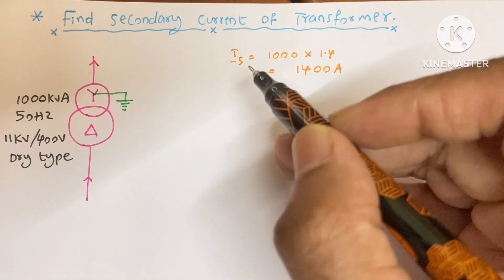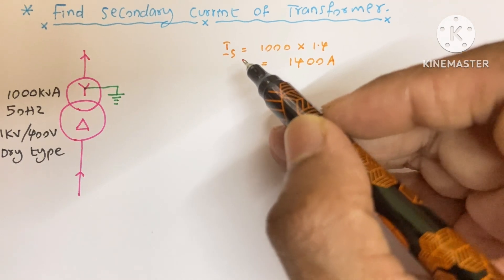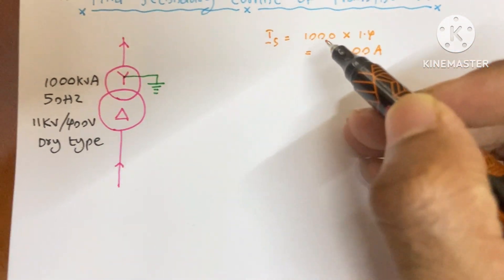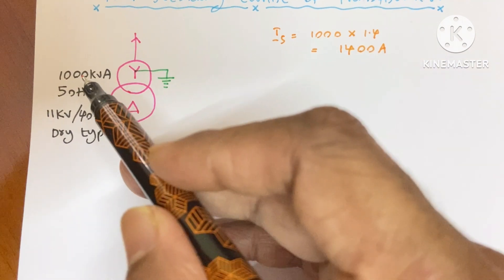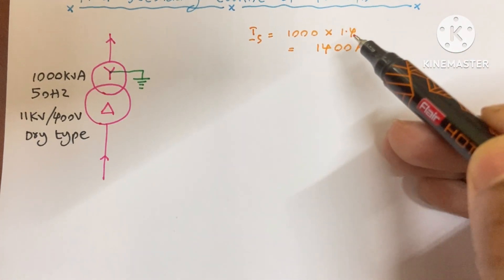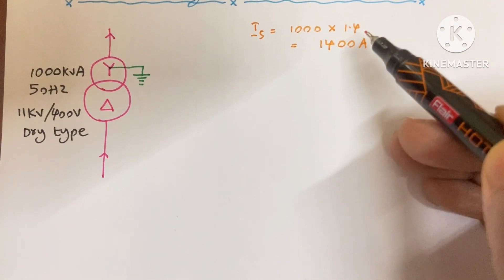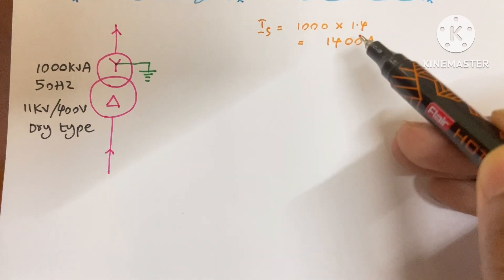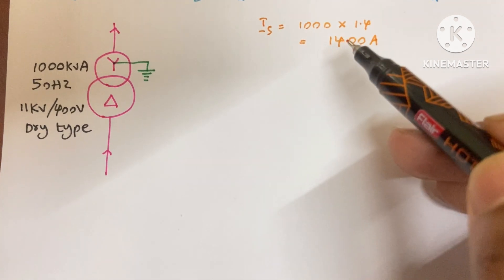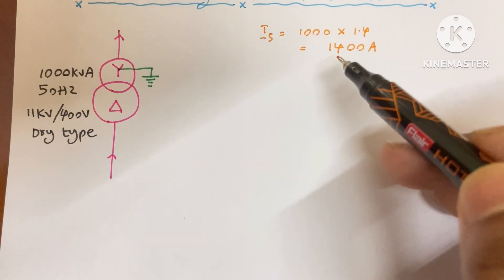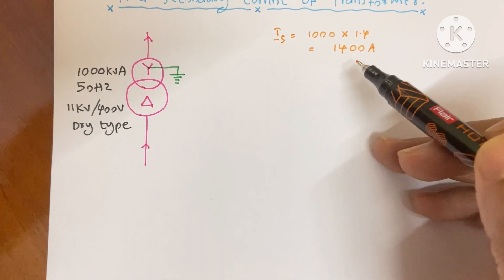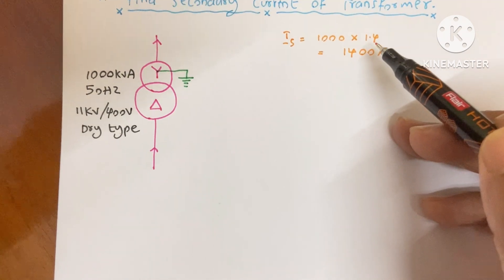This transformer's secondary current Is equals 1000 — this 1000 comes from the 1000 kVA — multiplied by 1.4, which is the magic value. So if you multiply these two together you get 1400 A. Now I will explain how we get this 1.4.